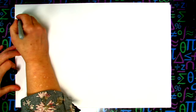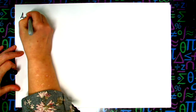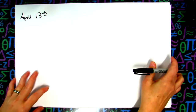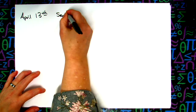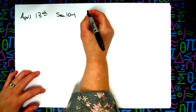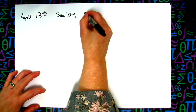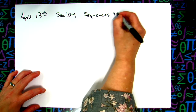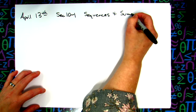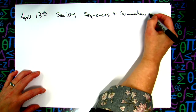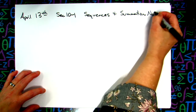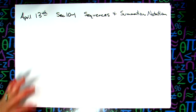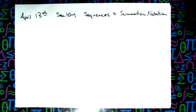Today is April 13th and we are in chapter 10 — we're going to take a look at section 10-1. We will talk a little bit about sequences, so you can learn what a sequence is, and we're going to take a look at some notation. They are really simple ideas.